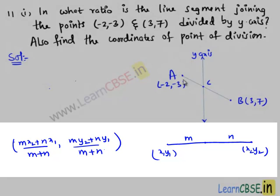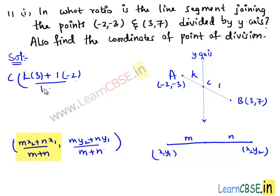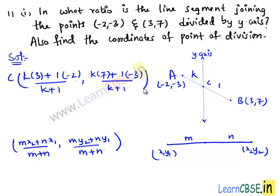Let C be the point which divides the line segment AB in the ratio k:1. Then the coordinates of point C will be: x-coordinate = (k×(−3) + 1×(−2))/(k+1), y-coordinate = (k×7 + 1×(−3))/(k+1), which equals (3k − 2)/(k+1), (7k − 3)/(k+1).